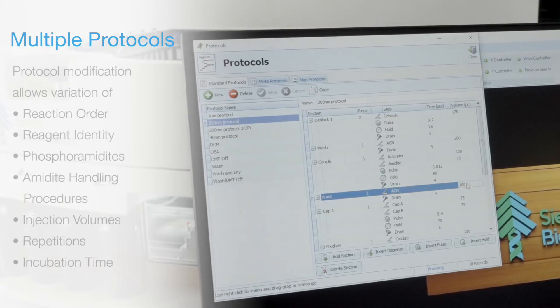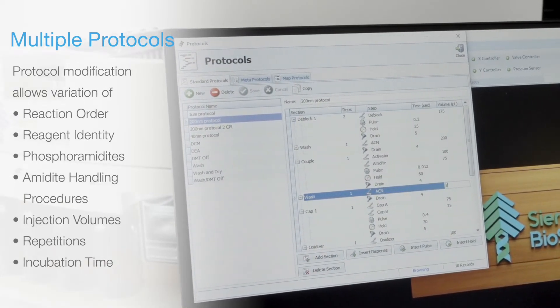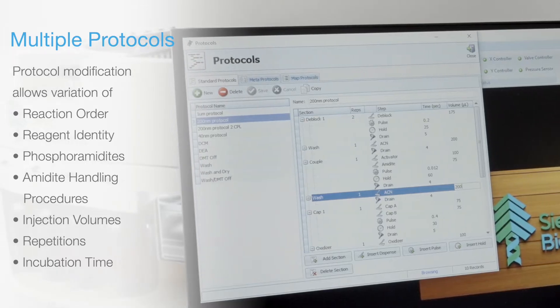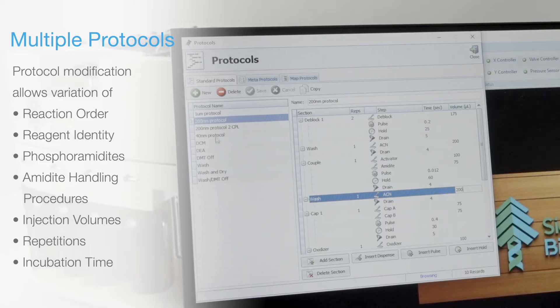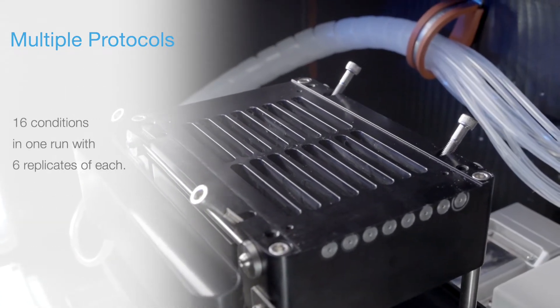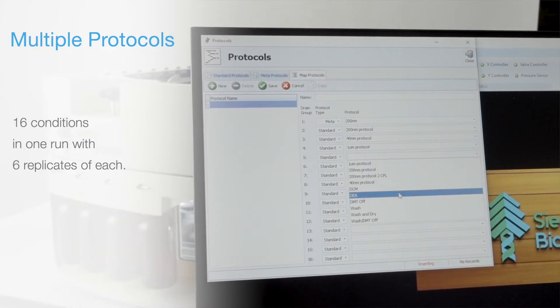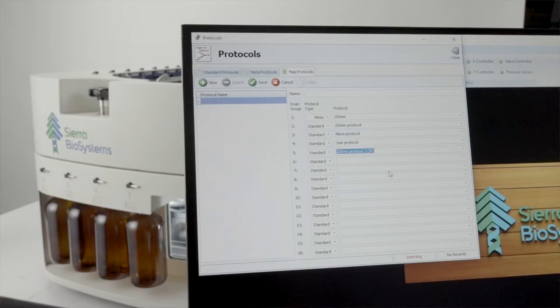This means changing reaction order, reagent identity, amidites, amidite handling procedures, changing the injection volumes, the repetitions, the incubation times. Everything can now be distinct to 16 segments of the plate, which means you can now test 16 conditions in one run with six replicates for each condition.